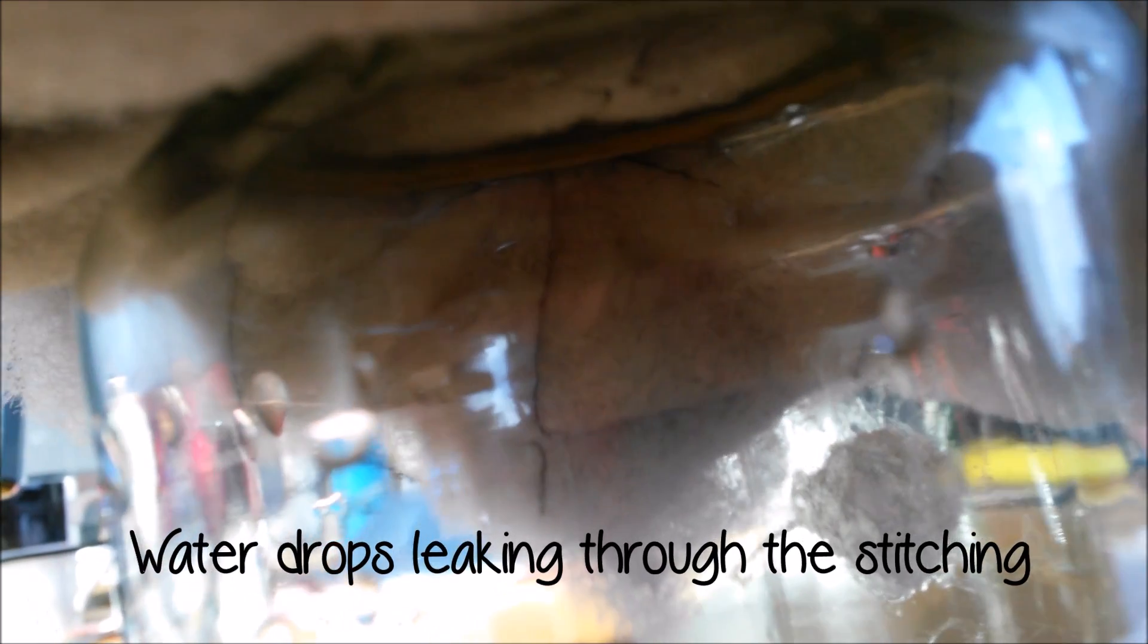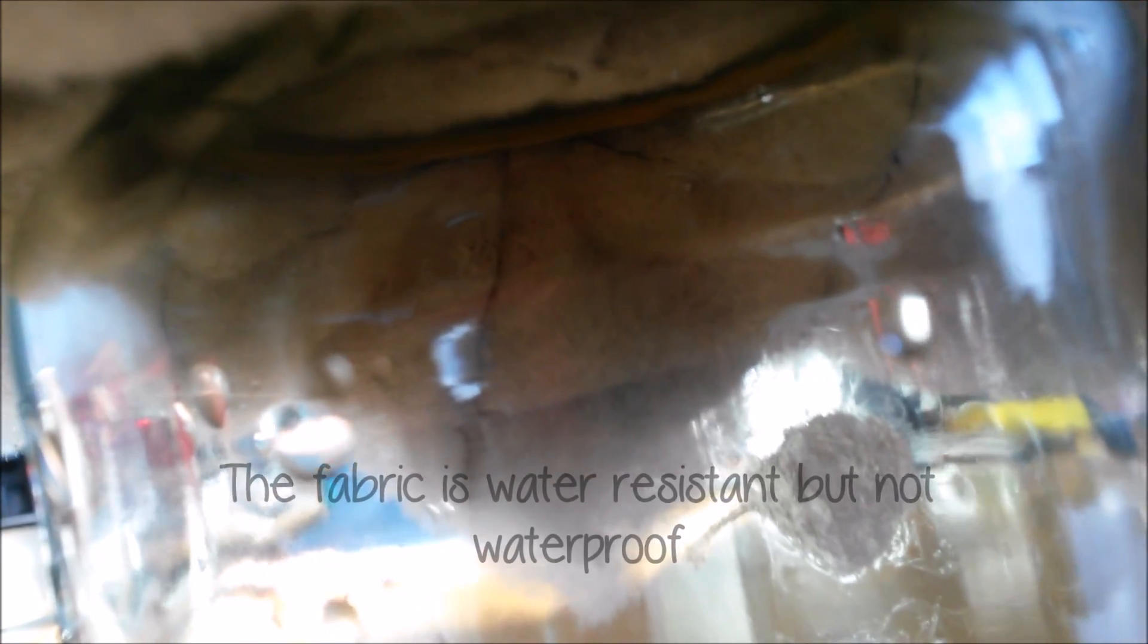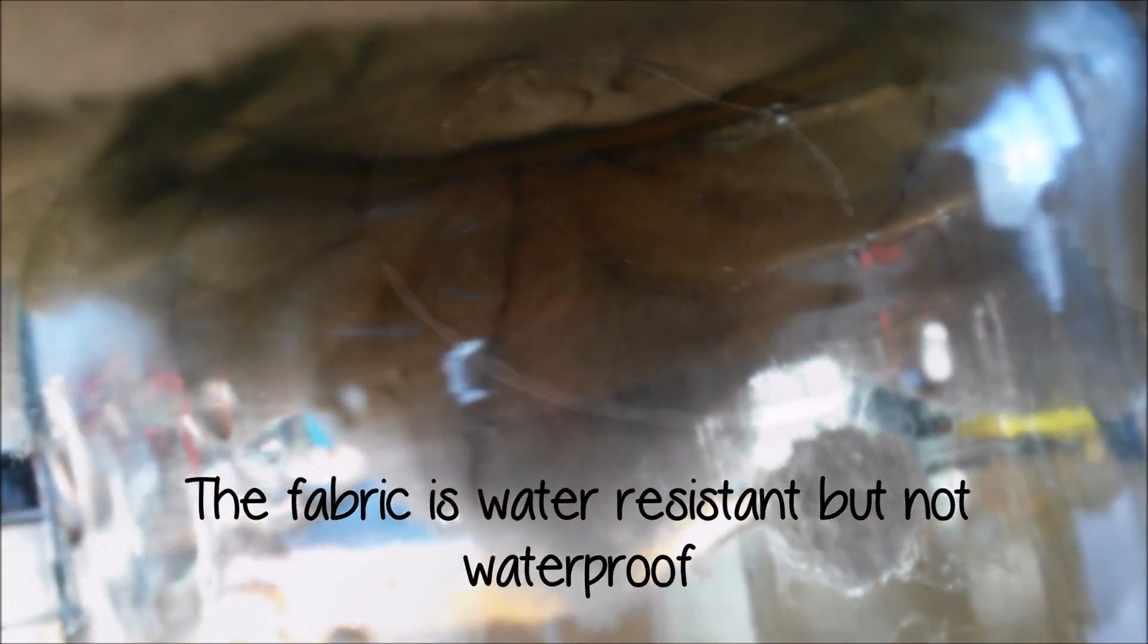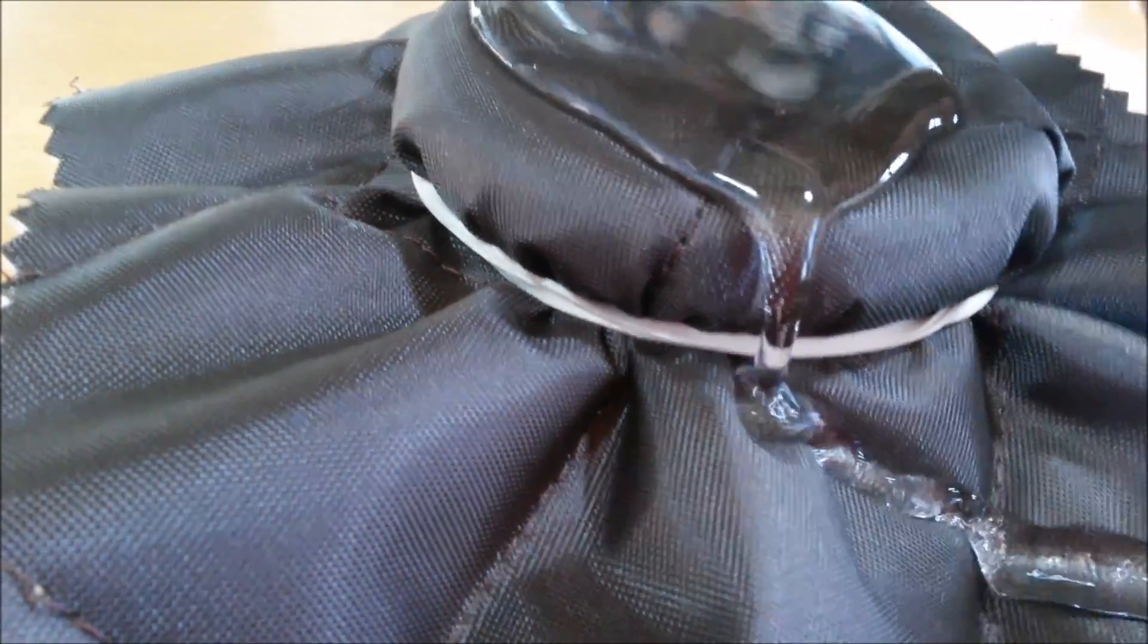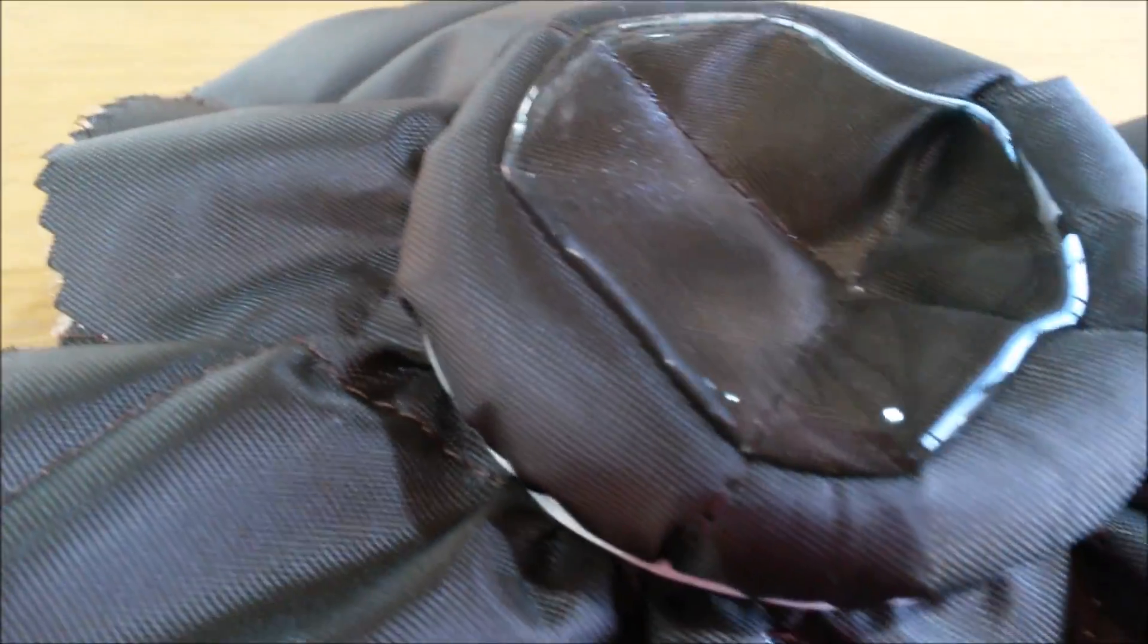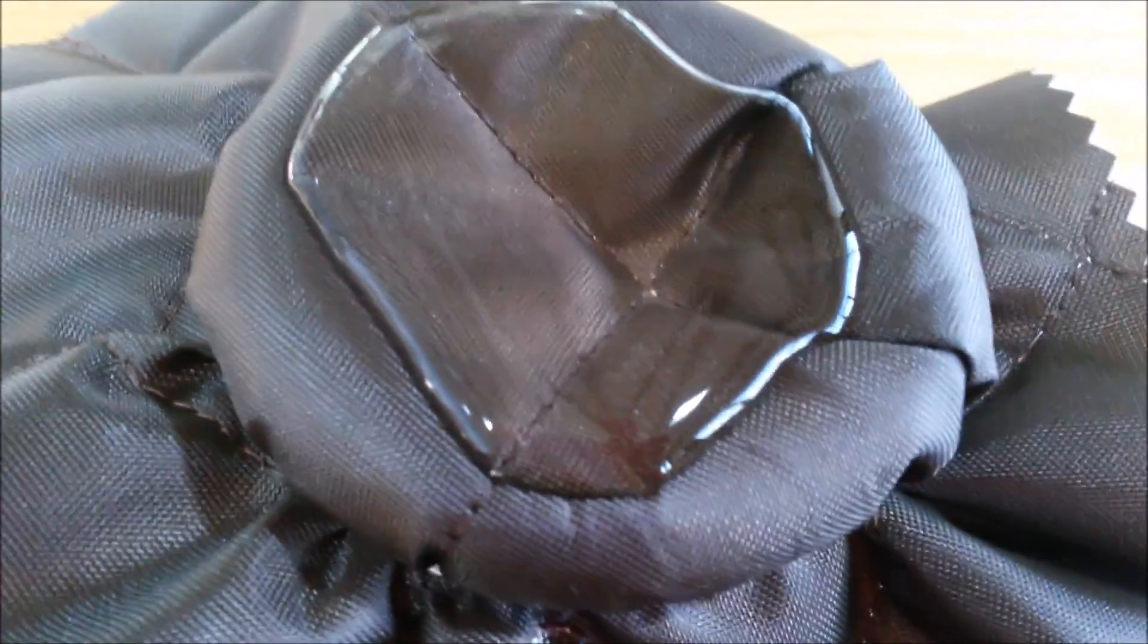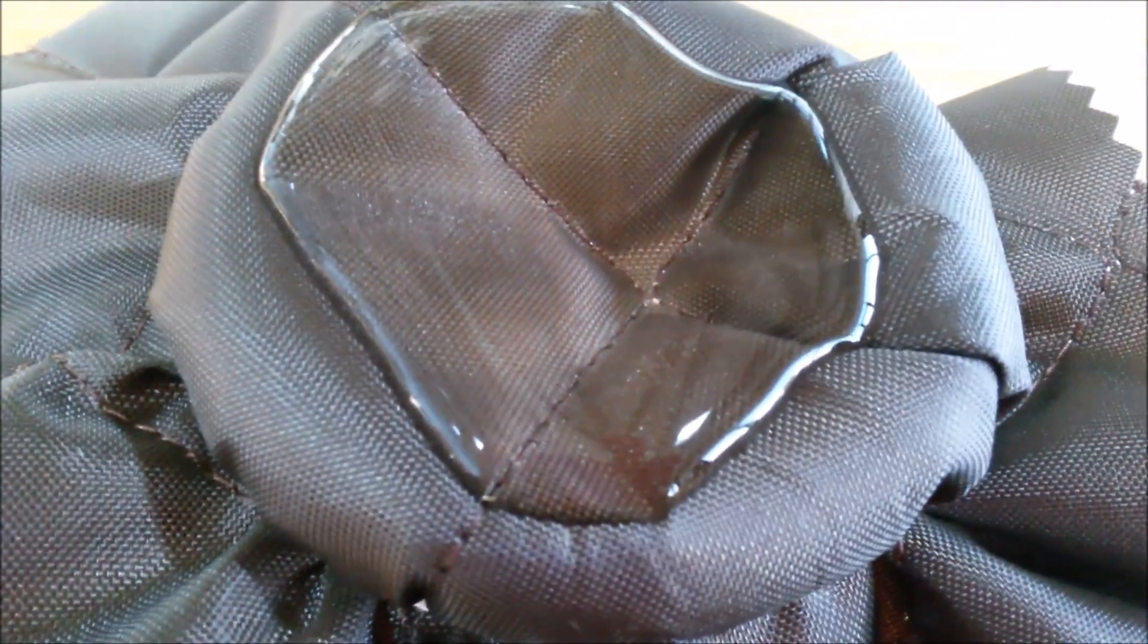You can clearly see the water drops leaking through the stitching, which makes the entire fabric construction not waterproof. With a larger surface area, such as a jacket, there would be more stitch points for the water to penetrate. However, the outer fabric has had a water-resistant finish applied to it, so water will not pass through unstitched areas.